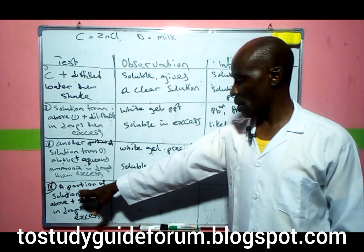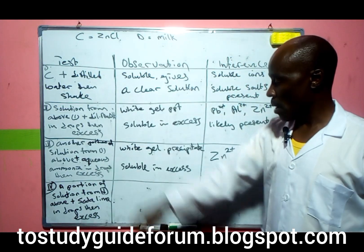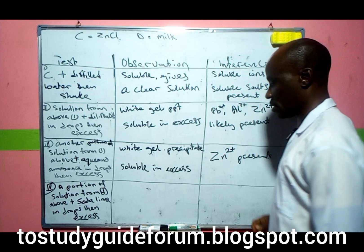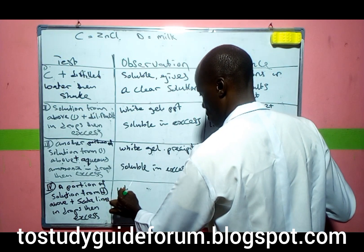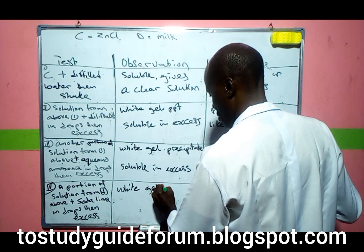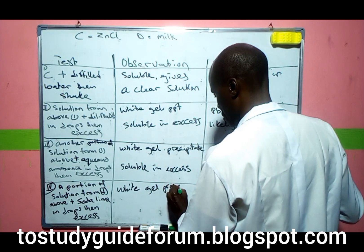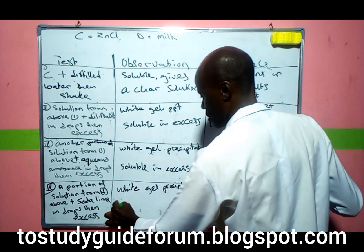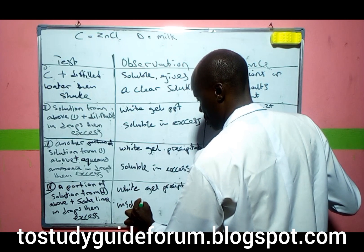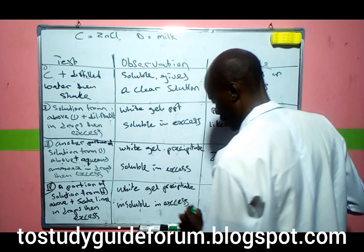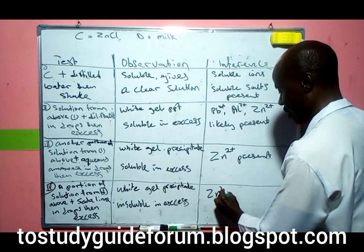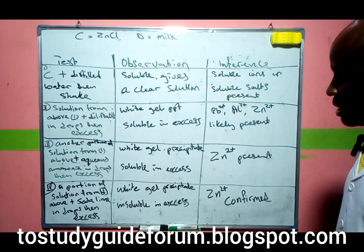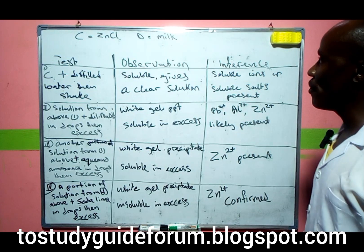In the last portion, we add soda lime solution in drops. We observe white gelatinous precipitate that is insoluble in excess. This confirms zinc ion is present. So what we have in salt C is zinc ion confirmed.